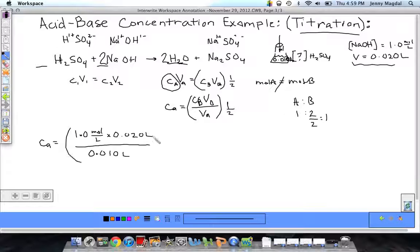And then that whole thing will get multiplied by 1 half. So I'm using my stoichiometry in this 1 half to get this so that the two values, the acid and the bases, will actually be equivalent in our calculation. So 1 times 0.02 is just 0.02 divided by 0.01 gives us 2, divided by 2, which is the same as multiplying by 1 half.